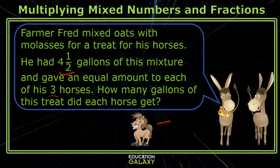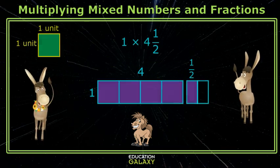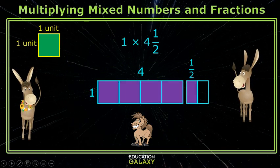Well, Homer here loves that treat. And since there's three horses, I just need to get one-third of it to see how much Homer gets. That's right. Here's your starting model, one times four and a half. Okay, this time I cut it into three parts.